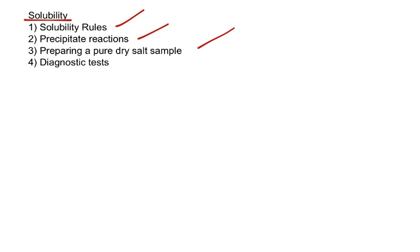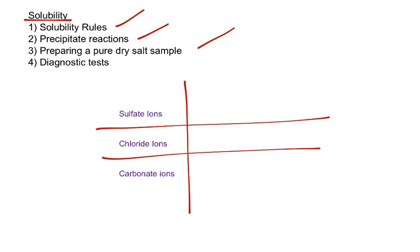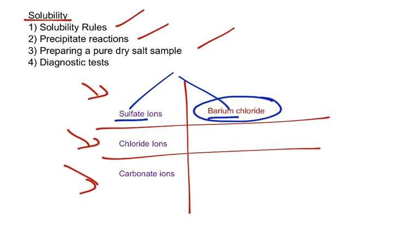And finally, diagnostic tests. So in an exam, they ask you to test how would you be able to detect sulfate ions, dissolved sulfate ions in solution, or chloride ions, or carbonate ions. So you should maybe be able to work this out now. So for sulfate ions, you use the soluble salt barium chloride, which will produce barium sulfate, which is insoluble, and therefore, obviously, that will prove sulfate ions are in there, because we know only barium sulfate is insoluble in this context.